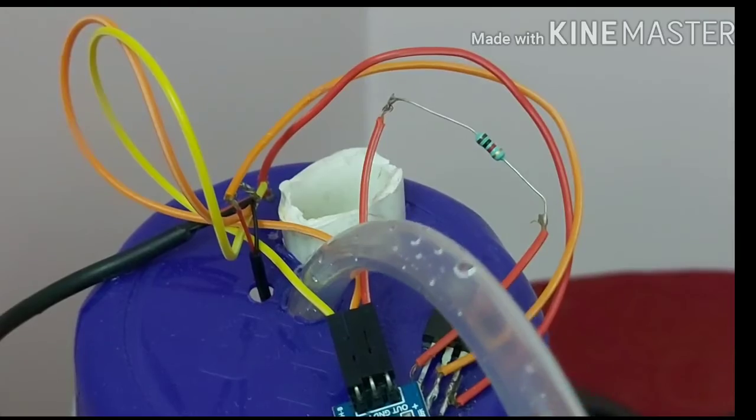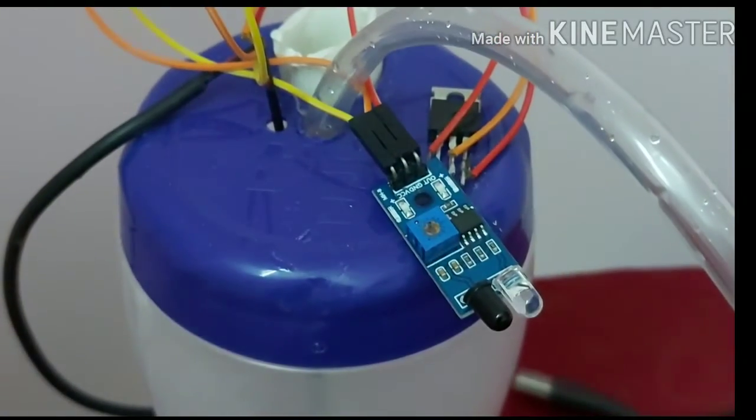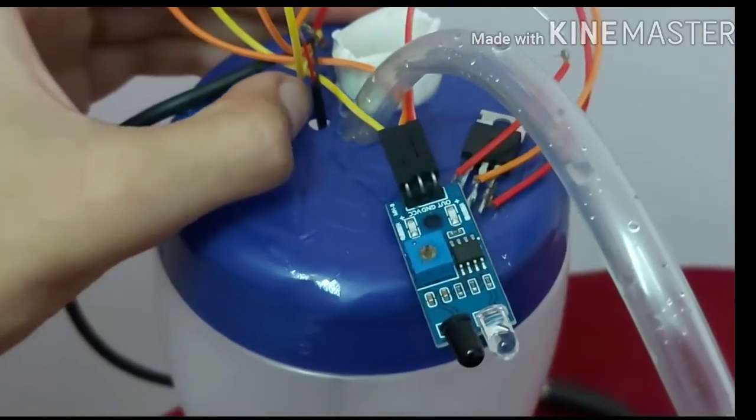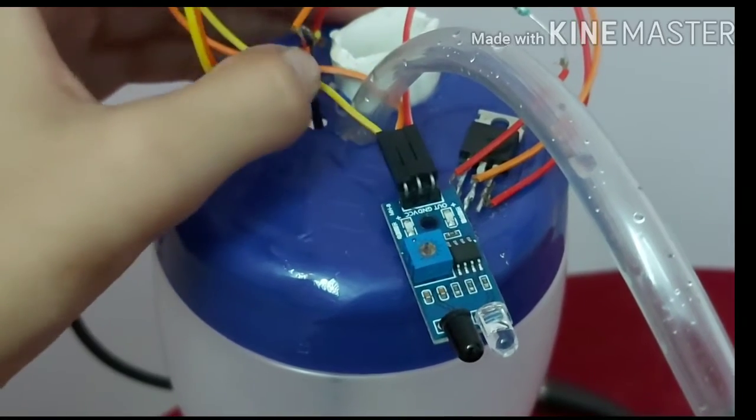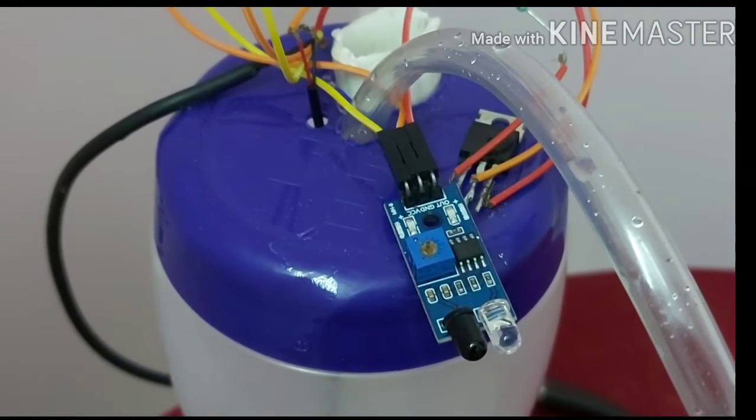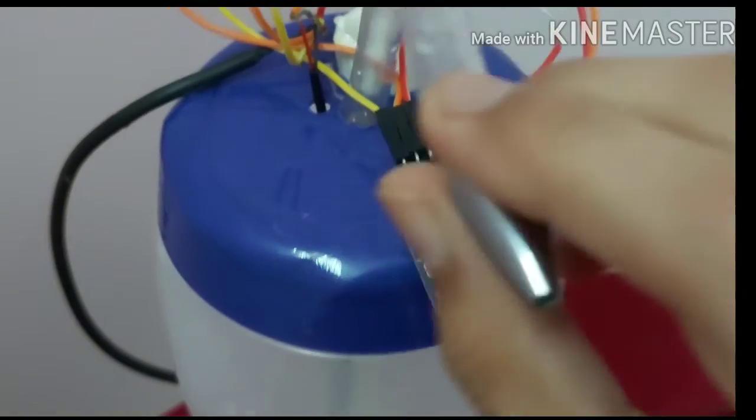Then we have to take out the DC pump's wire. This is my DC pump's wire, these two - red and black, positive and negative. And then we have to take out the DC pump's pipe. This is my pipe.